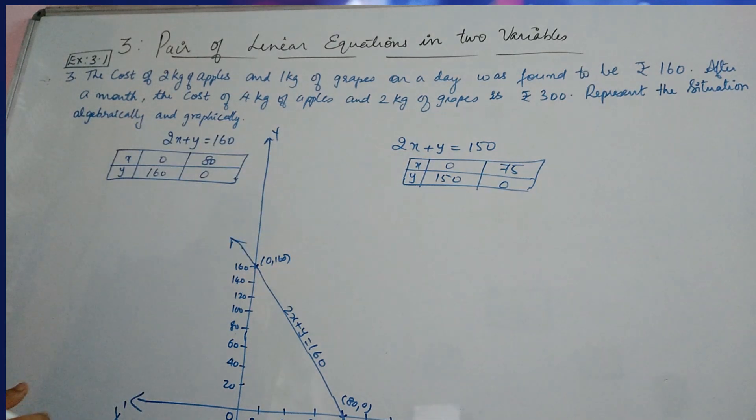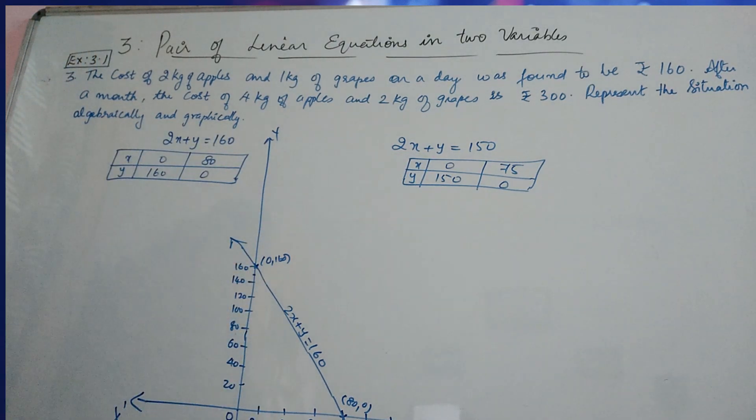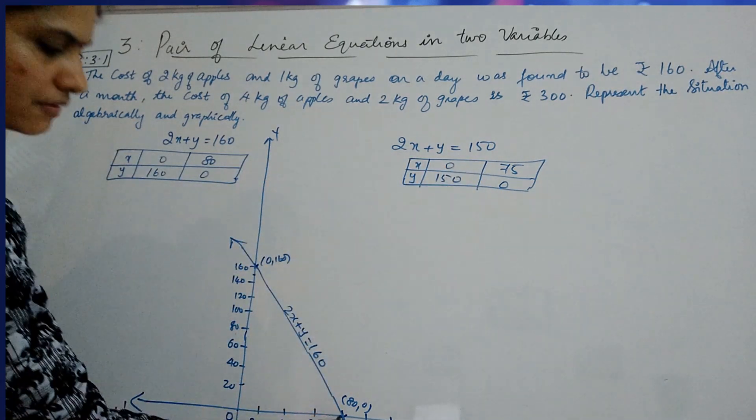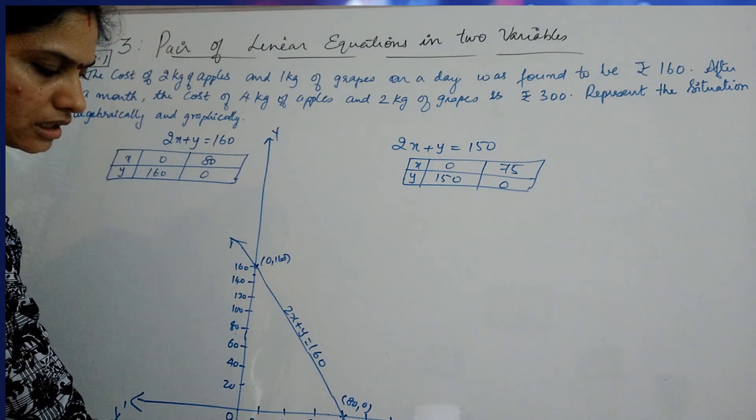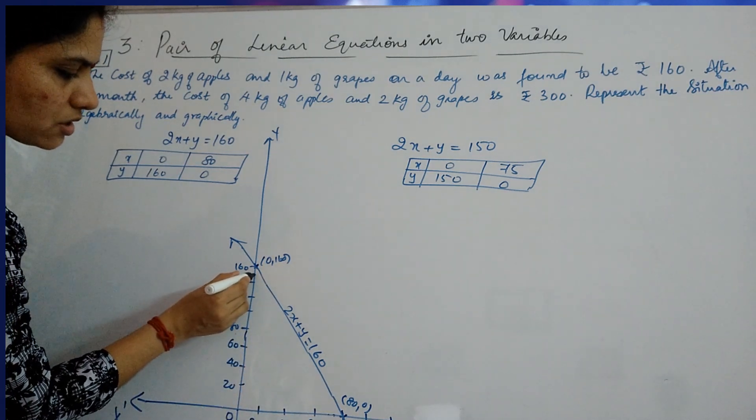The other line is when X is 0, Y is 150. When X is 0, Y is 150, will be in between 140 and 160. And when Y is 0, X is 75. 75 will be, this is your 70 in between point. Here you will have 75. So, you join these two.